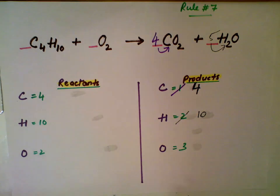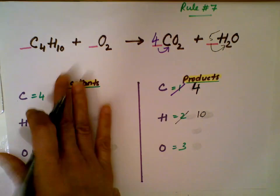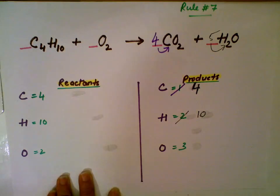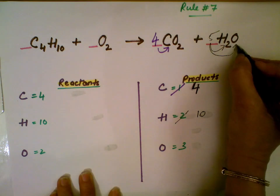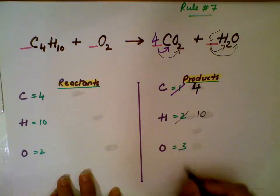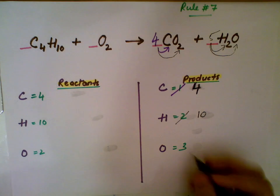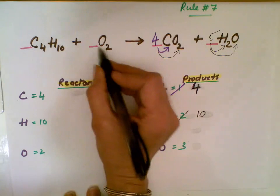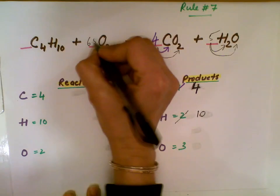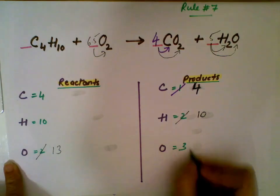Also, remember: whenever you have pure elements, you leave them to balance at the end. Always balance the complex molecules first and pure elements last. Now comes oxygen. On the product side, 5 times 1 is 5, and 4 times 2 is 8, so 8 plus 5 equals 13 — you have 13 oxygen on the product side. So I need to make the reactant oxygen 13 as well. I'll use a fraction: 6.5 times 2 is 13. My oxygen is balanced.